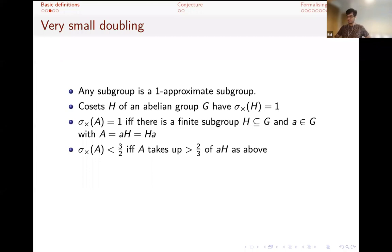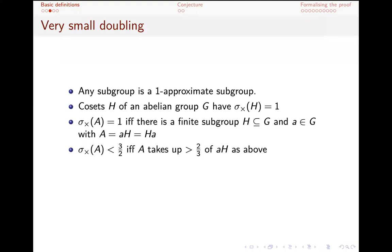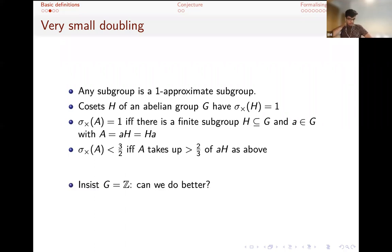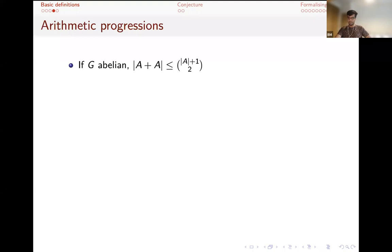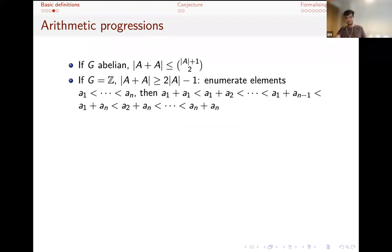You can actually improve this result slightly. Not just doubling one, but less than three over two. The if-and-only-if condition is that A takes up most of a coset - in particular, at least two thirds of the coset. So when you have very small doubling, we have a really tight characterization of what the subset must look like. But what if G equals Z? Can we do better?